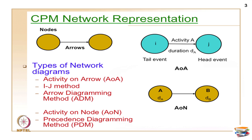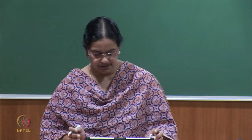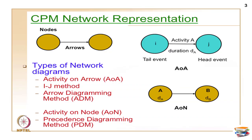In the activity on arrow diagram, activities are represented along the arrows, as the name implies. Events are represented along the nodes, and activities are along the arrows. Activity A is represented here, with I as the tail event and J as the head event. In AON, as the name implies, activities are on the nodes, and the arrow marks generally show the relationships between two activities.